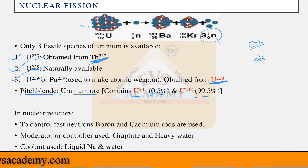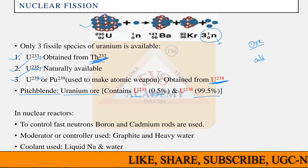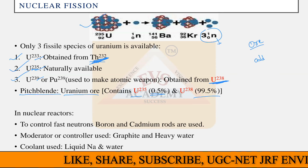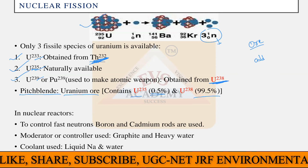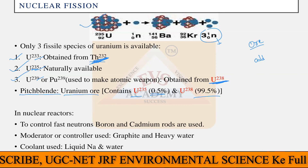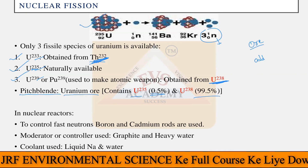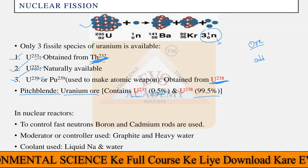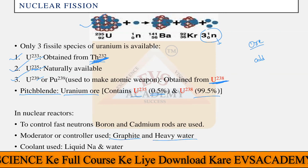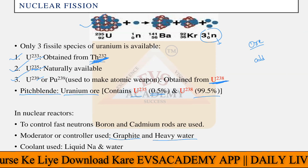To control the fast neutrons, boron and cadmium rods are used. When you need to stop the reaction, insert boron or cadmium rods — the neutrons are absorbed and the reaction stops. A moderator or controller is used to control the reaction, and this can be done with the help of graphite and heavy water.